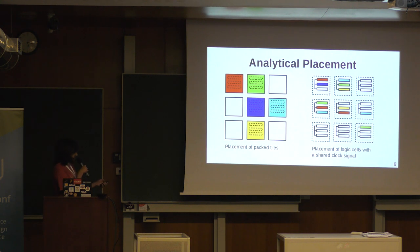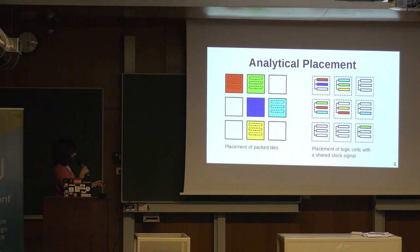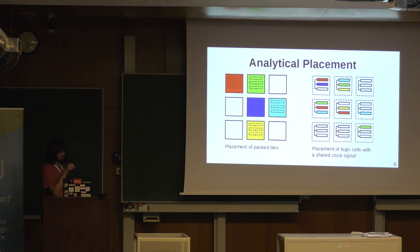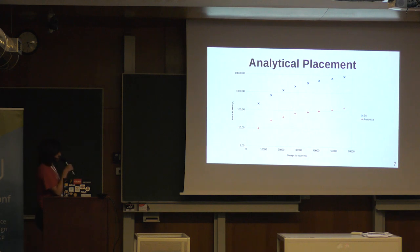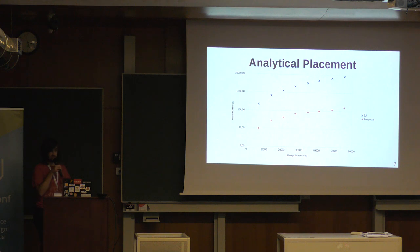Some of the modifications we made to this algorithm: traditional FPGA placement packs logic elements into tiles and then places those tiles. In NextPNR we place logic elements individually without first packing them into tiles, which adds more constraints because you have to consider things like shared clock signals. But once we got it working, the results were really worthwhile. Looking at runtime — on a logarithmic scale — the new analytical placer is about 50 times faster on some designs, with no real reduction in quality. It was a really big runtime improvement and a big step forward for bigger ECP5 designs in particular.